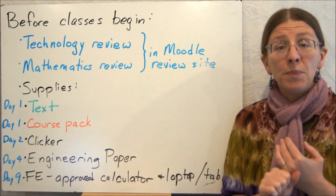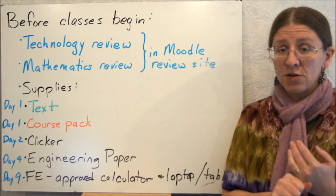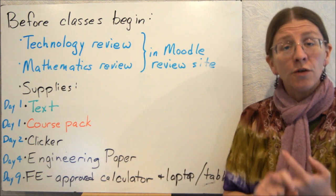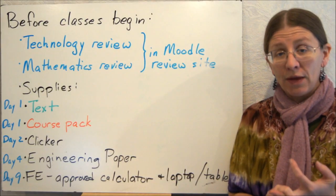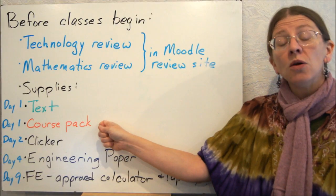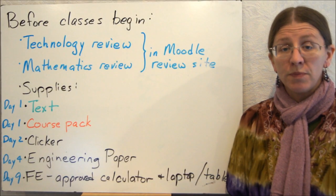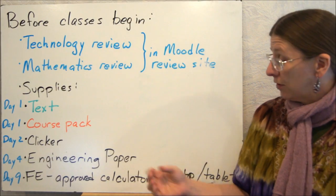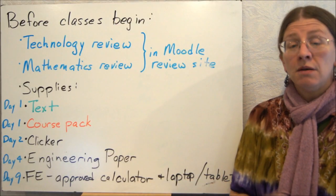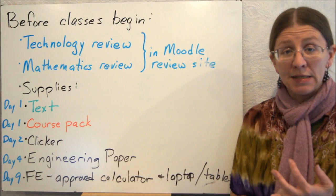You also need to have your supplies together. The text is Beer and Johnston — there are a variety of editions, but the eighth is not ideal, so use the ninth or tenth. Either of those is fine. The course pack — as noted in the email — contains your skeleton notes and the slides from class. You'll need a clicker; we're using Turning Technologies clickers, like most others at the university. You'll need engineering paper, and for the exams you'll need a laptop and an FE-approved calculator.